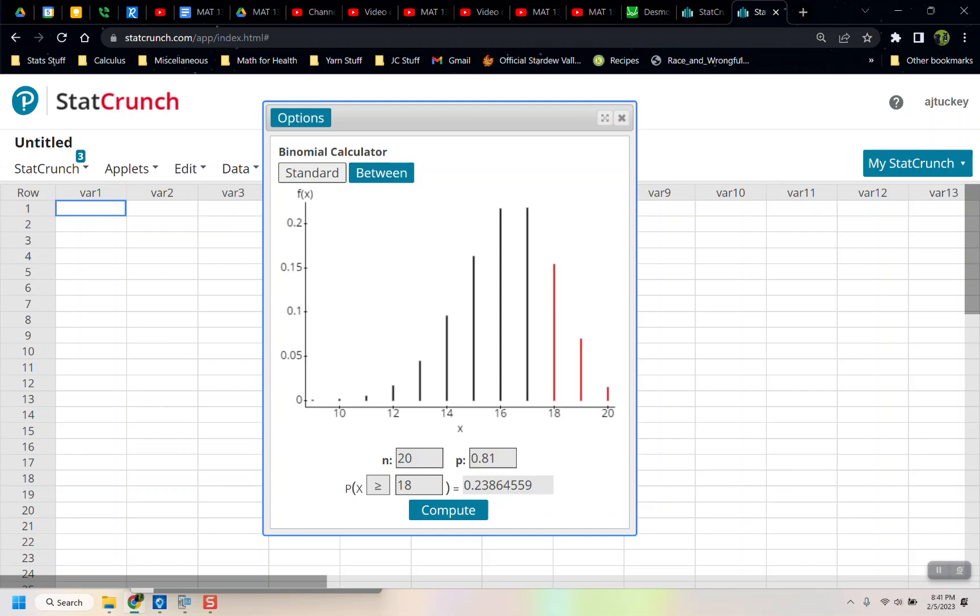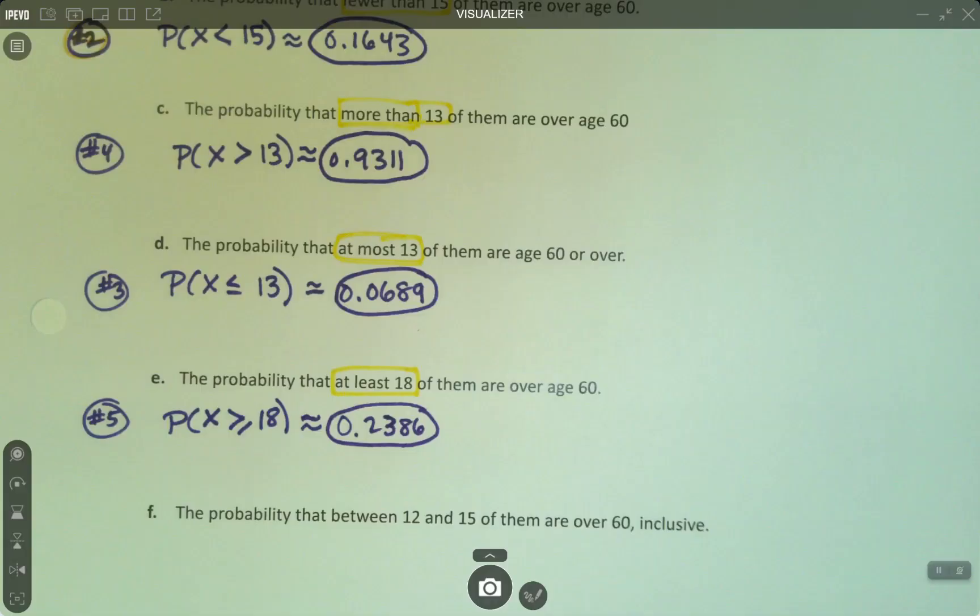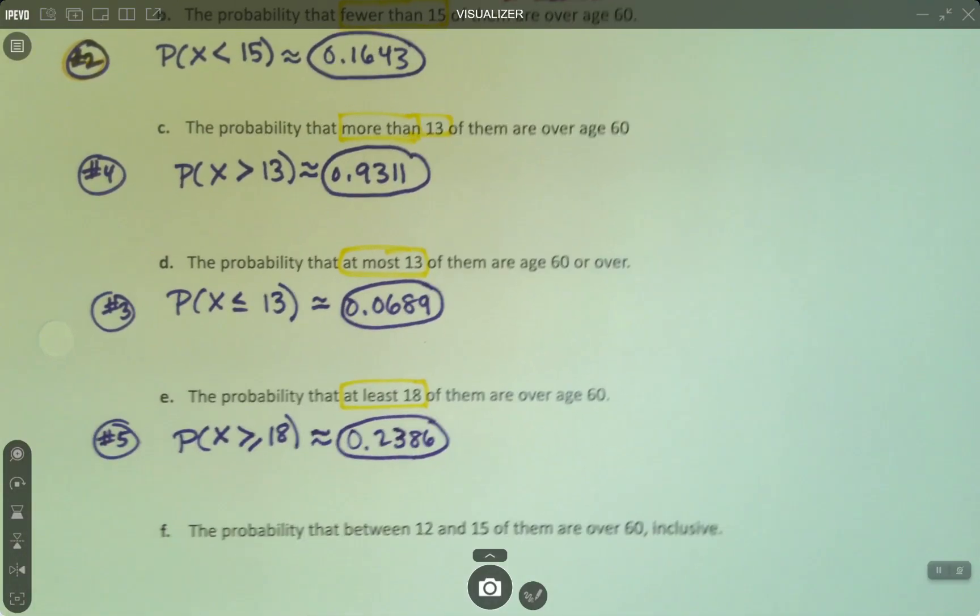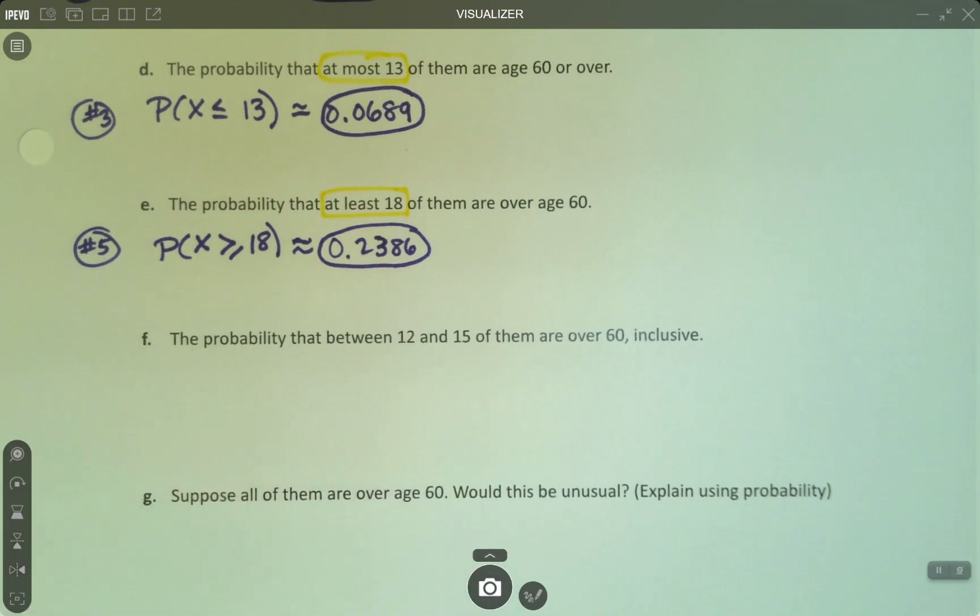Everything we've done so far was a standard. You can see the standard part is gray. So all of these were standard: less than, more than, fewer than. Now number, or letter F however, is a between.